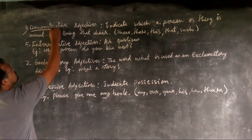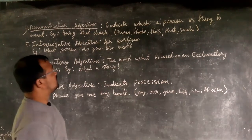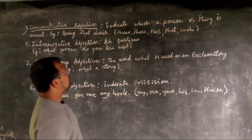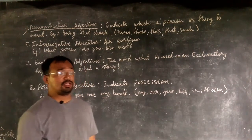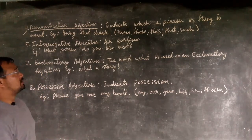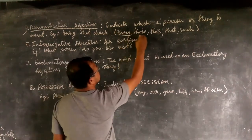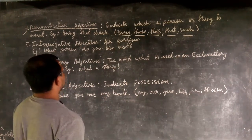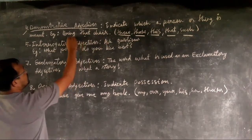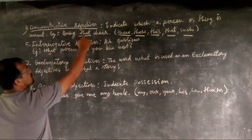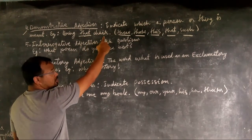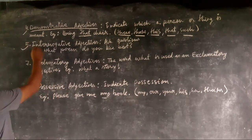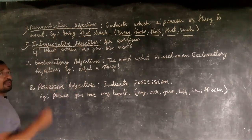The fourth type is the demonstrative adjective. It indicates which person or thing is meant. Words like this, that, these, those, and such are demonstrative adjectives. For example, 'Bring that chair' — the word 'that' refers to the chair, which is a noun. This is called a demonstrative adjective.